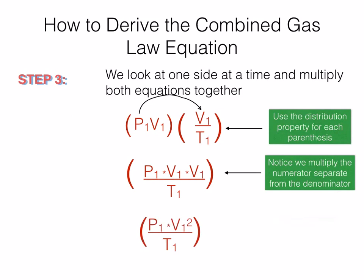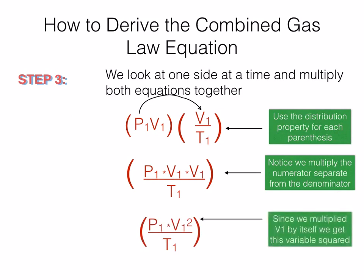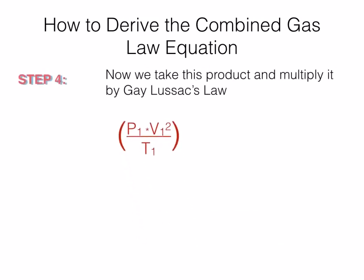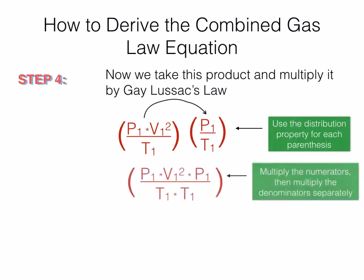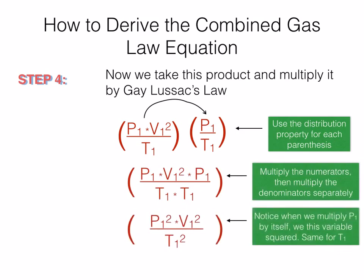When we factor these a little bit further and multiply it all, we're going to get P1 times V1 squared divided by T1, since V1 is multiplied by itself. Now we take this section and introduce Gay-Lussac's Law. We're going to multiply it as well using distributive property, and we get P1 times V1 squared times P1 in the numerator, and T1 times T1 in the denominator — giving us P1 squared times V1 squared divided by T1 squared.